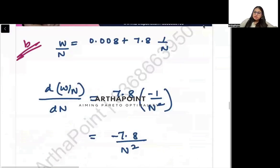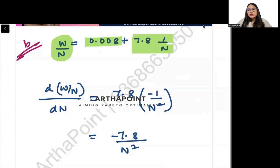Look at the second model. Here we are saying that W by N equals 0.08 plus 7.8 divided by N. What I can do in this case is differentiate. If I differentiate both sides with respect to N, I will get how W by N changes when N changes.